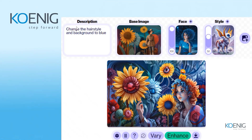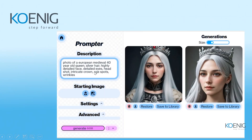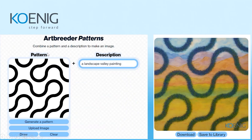As we saw in the demonstration, we provided base images, faces, and styles and generated different images. We saw that with the Prompter, you just provide input, do settings if needed, then click generate — and it takes only around 0.033 seconds to generate an image, meaning less than one second. You can also use Artbreeder's patterns feature to create landscapes by providing patterns as input along with a prompt.